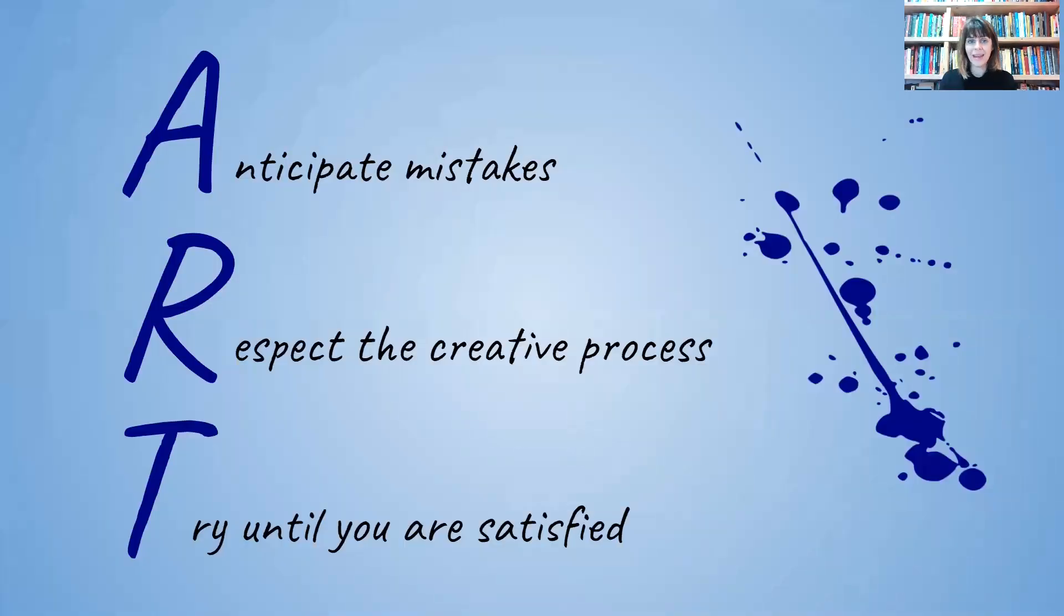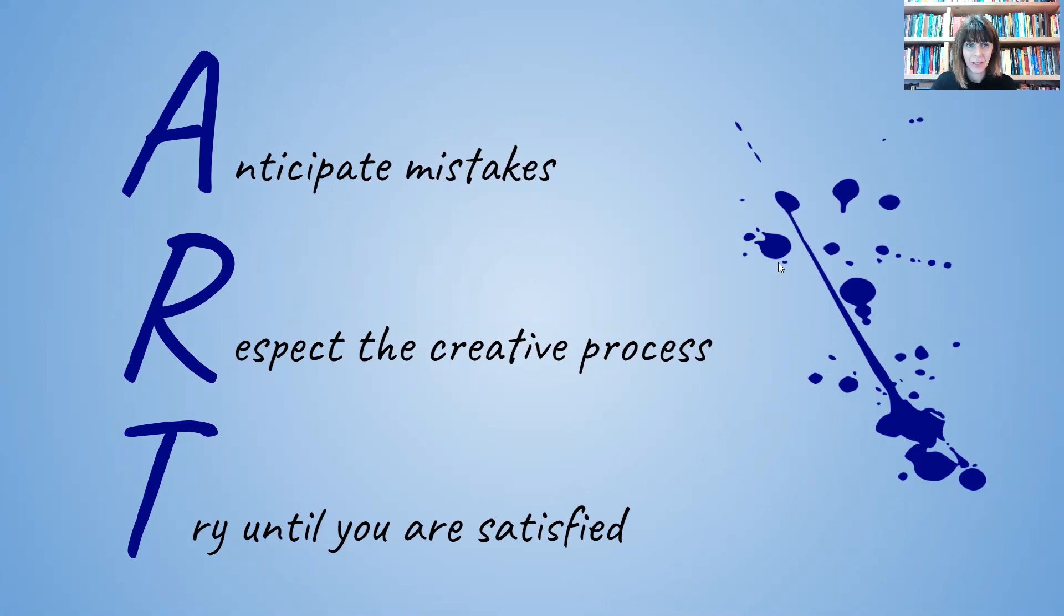In art, we anticipate mistakes, right? We anticipate mistakes. Notice I only did one drawing, not because I'm such a great artist, because I know I have to work with my mistakes, not against them. So I respect the creative process, and I try until I'm satisfied, and I expect that you will do that too. Today's objective. We are drawing an object illuminated by a light source. In this case, our object is just a simple sphere, but it does look quite a bit like you could actually pluck it off the page, and that is the objective. Let's just get started.